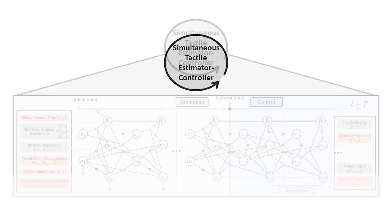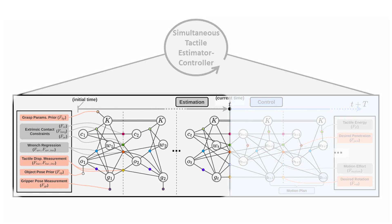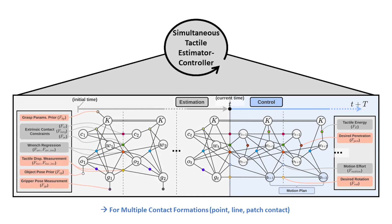This figure shows the factor graph-based architecture of the simultaneous tactile estimator-controller. The left part of the factor graph is responsible for aggregating measurements and estimating the contact states. The right part of the factor graph is accountable for turning the control objectives and desired object rotation into the planned gripper motion. All these estimations and control can be done for multiple contact formations, such as point, line, and patch contact.